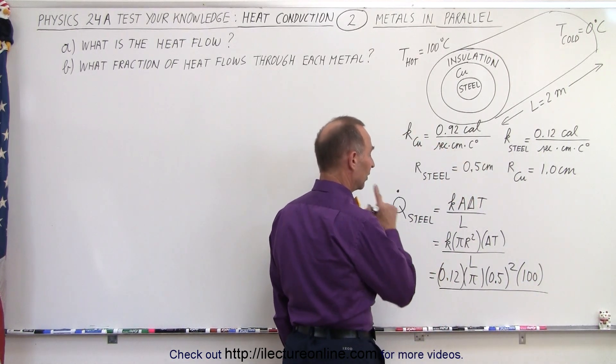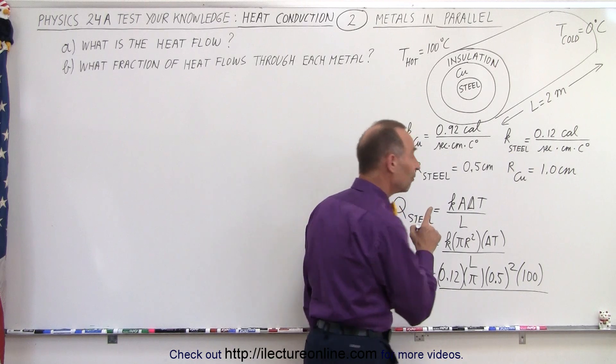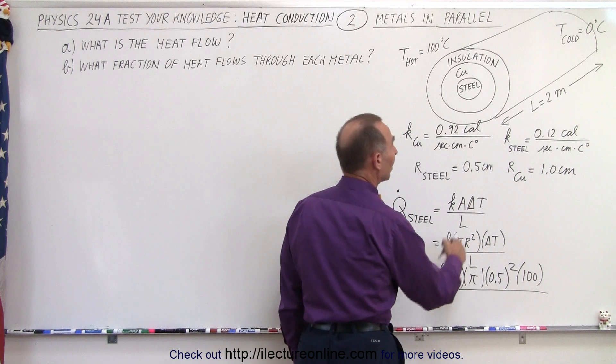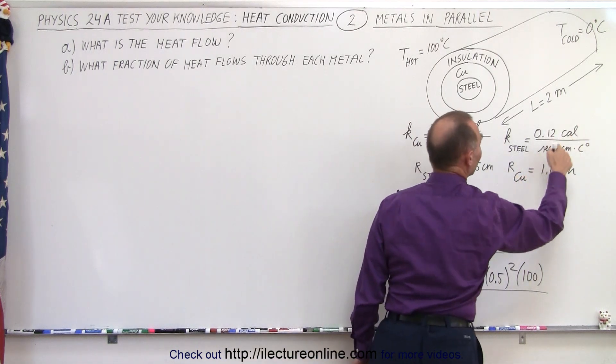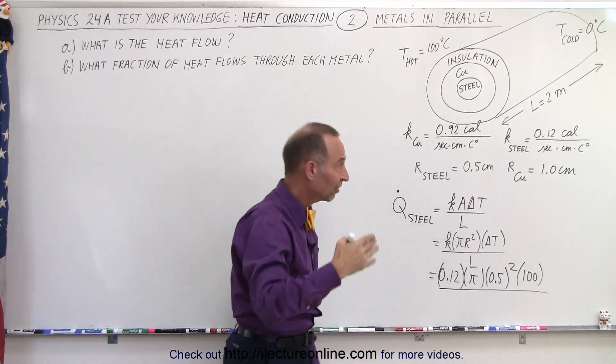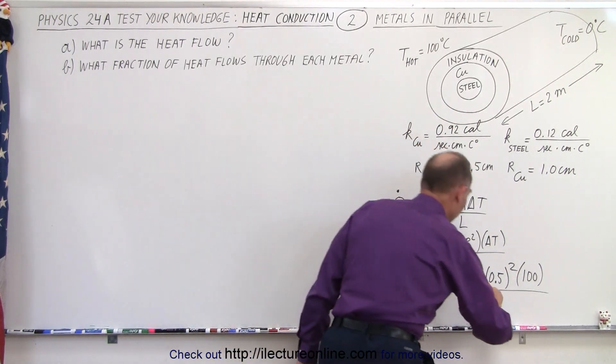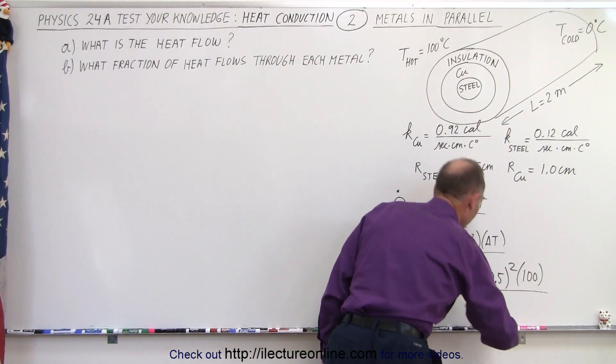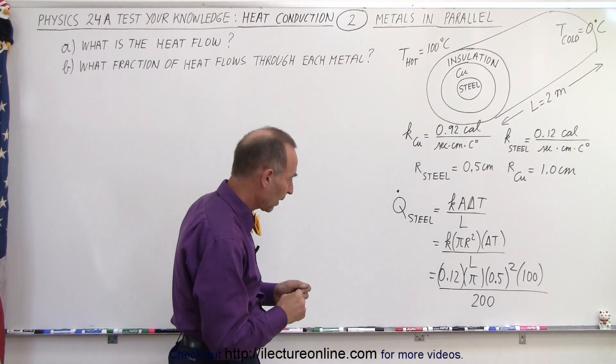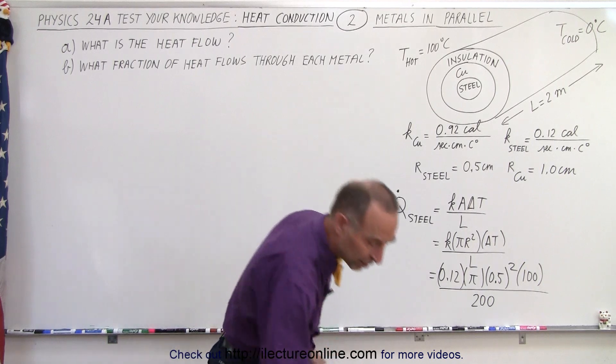And the length, well let's see here, do we have to divide the length in terms of centimeters or meters? Now everything here is in units of calories, seconds, and centimeters. So if everything is in centimeters, we have to define the length in centimeters as well, otherwise we have a mismatch of the units. All right, so everything will now be in terms of calories per second.